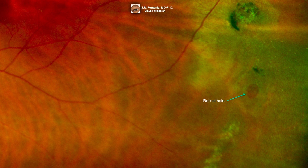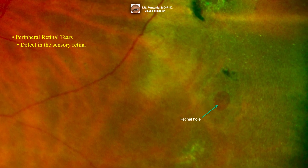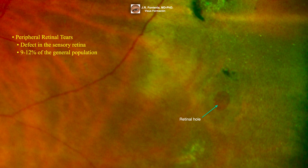Pointed by the arrow we can see a peripheral retinal hole. Peripheral retinal tears are defined as isolated tears due to a defect in the sensory retina caused by traction of the vitreous after an acute posterior vitreous detachment. Its prevalence is 9-12% of the general population.